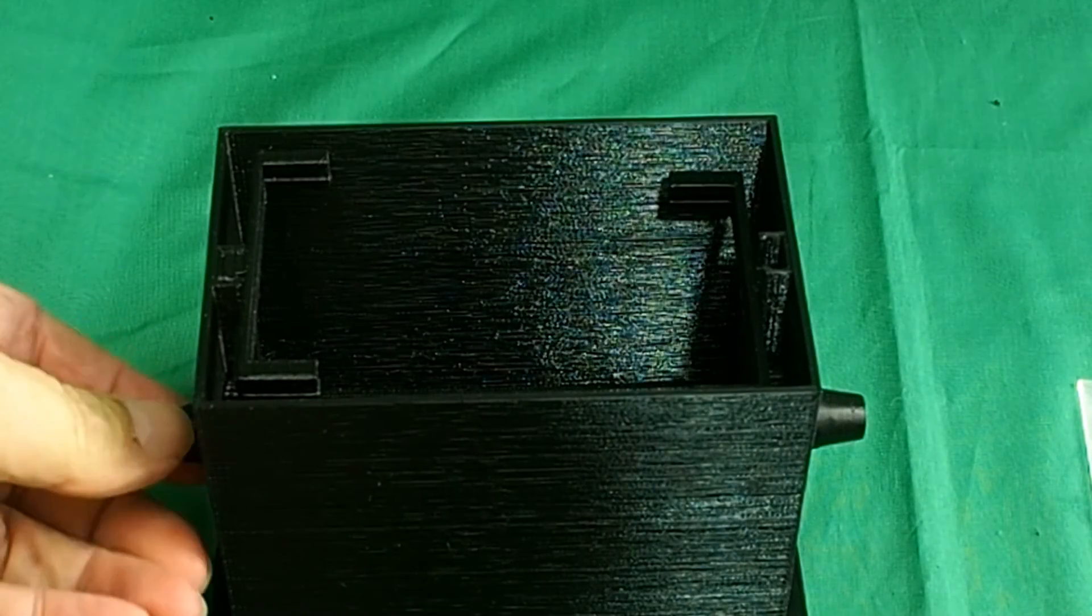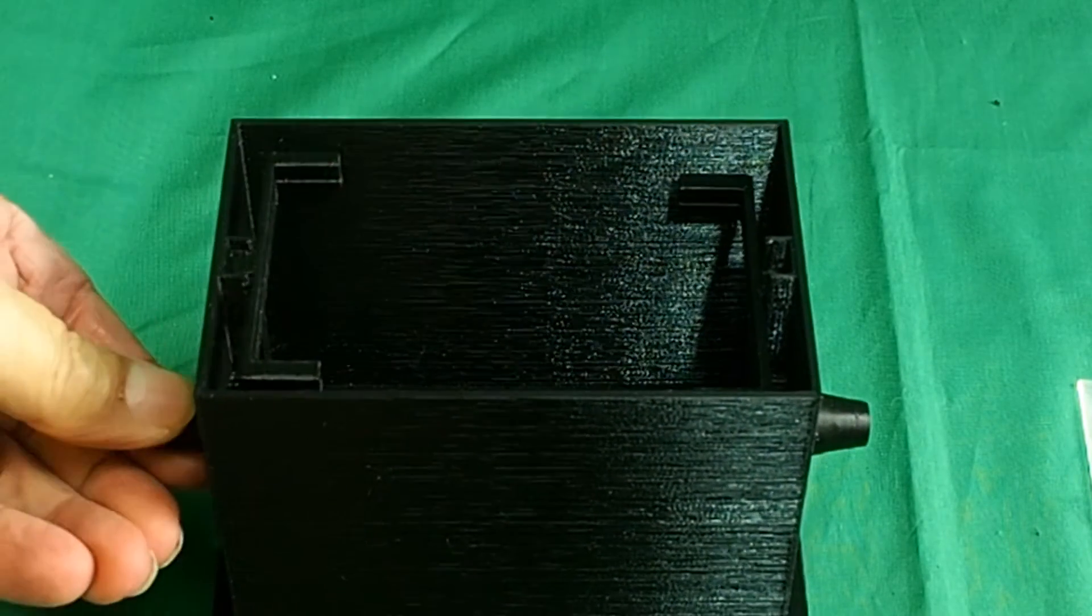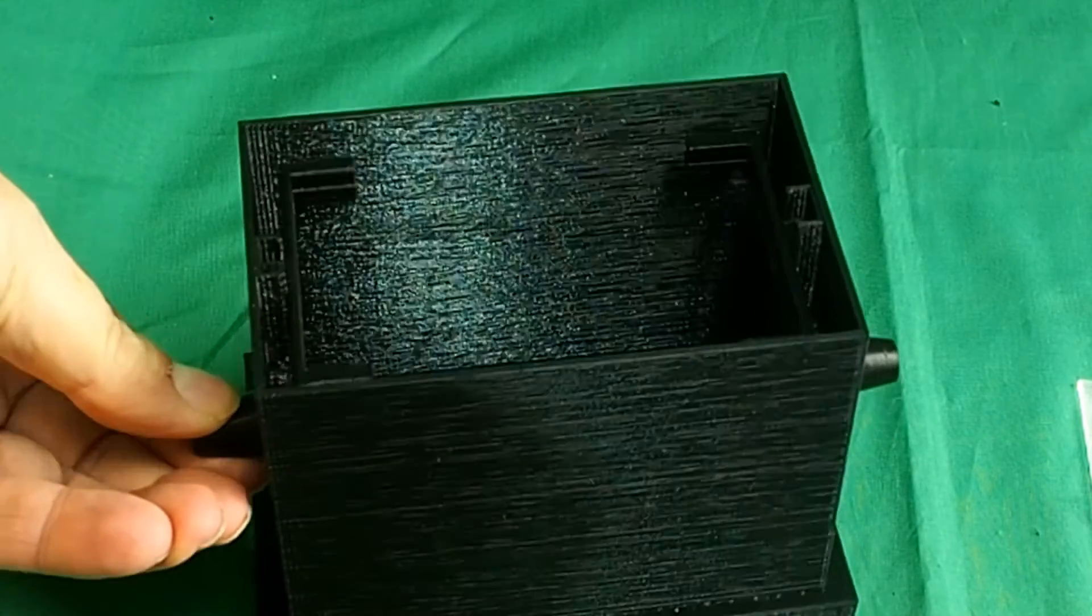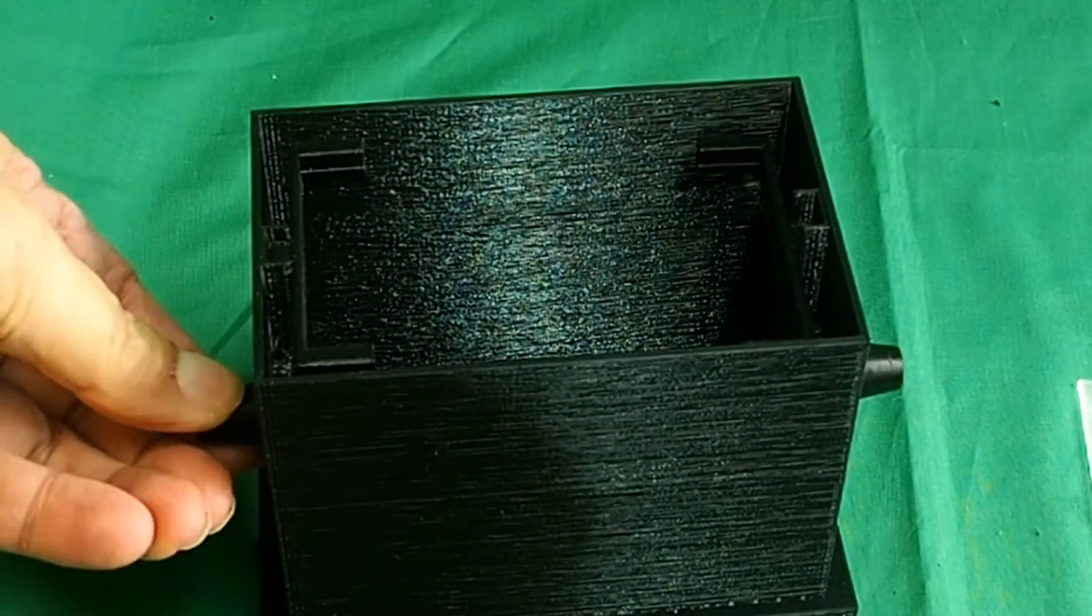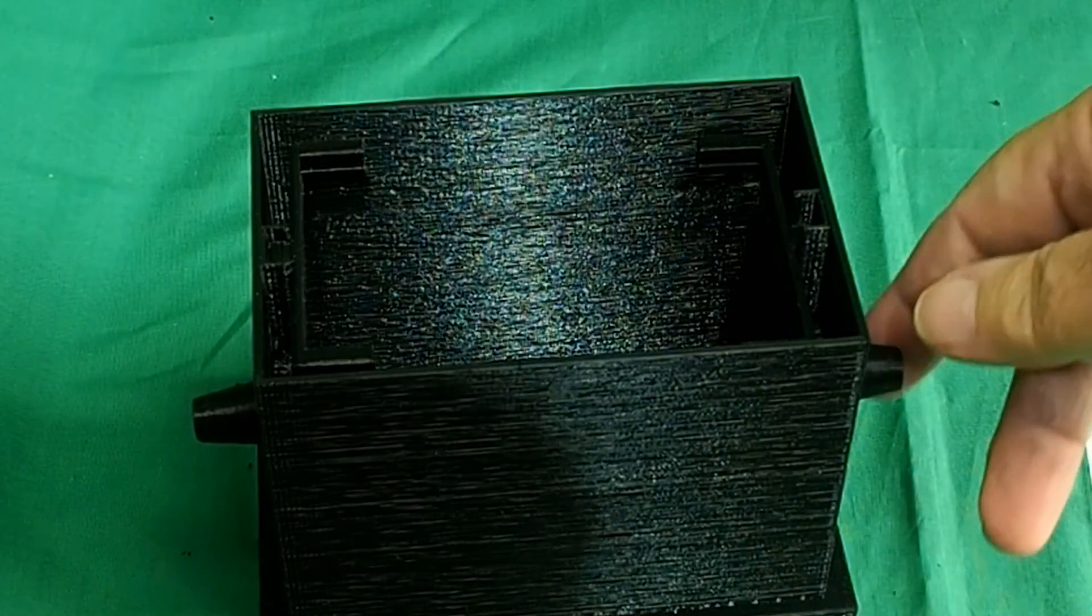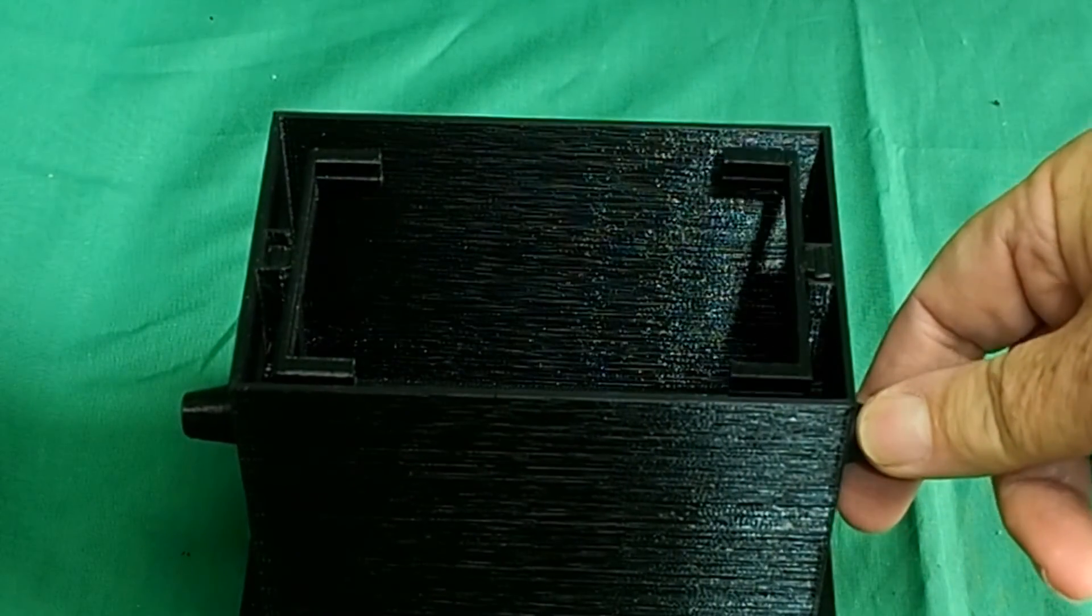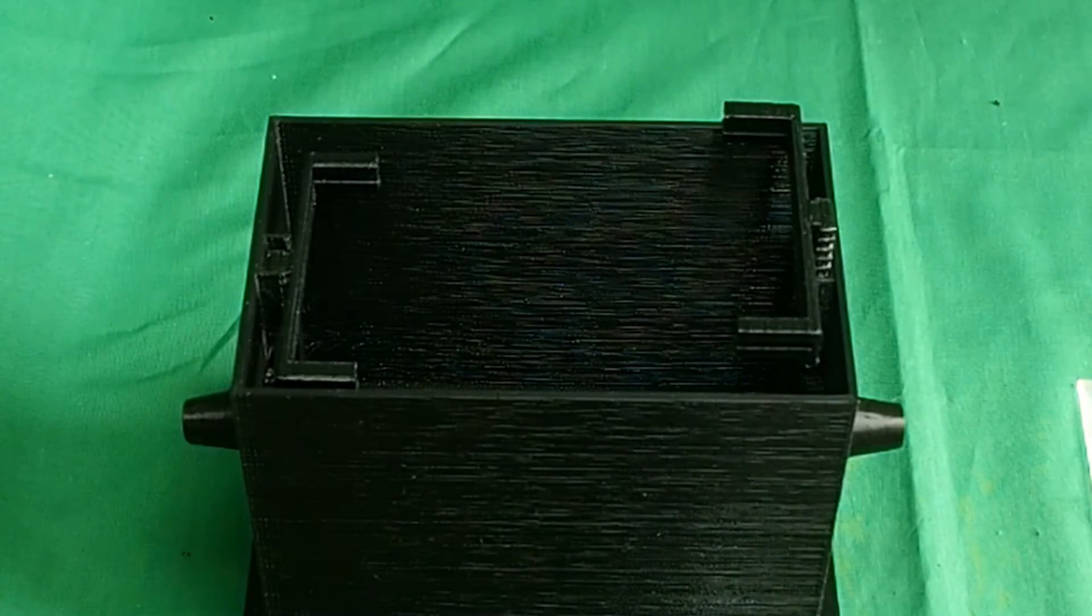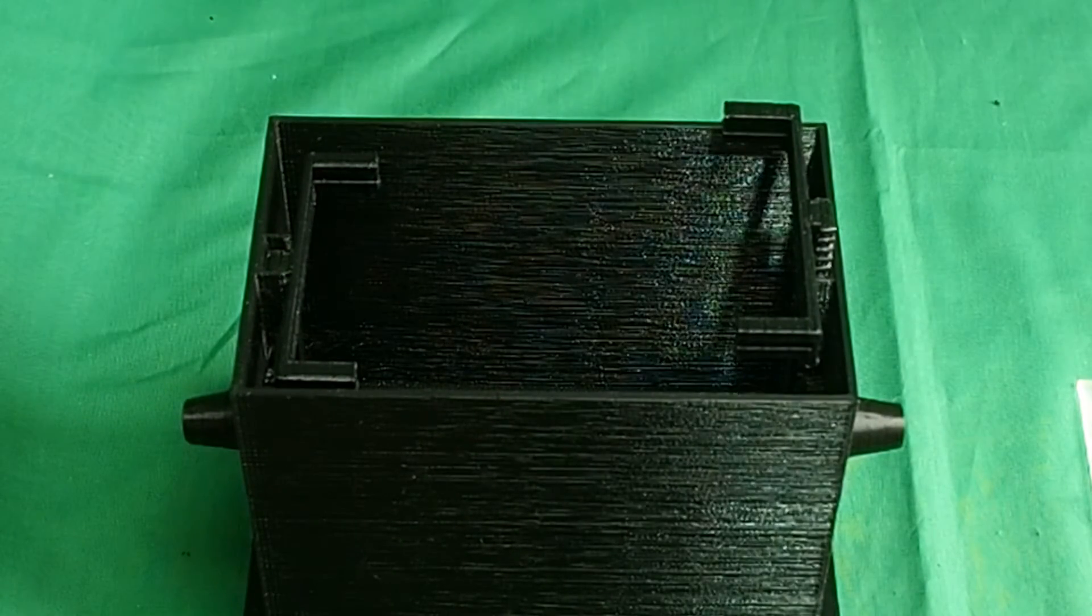And now you'll see when you turn the knob, the rack moves up and down, both sides. So now we're ready to put the Fresnel lens in.